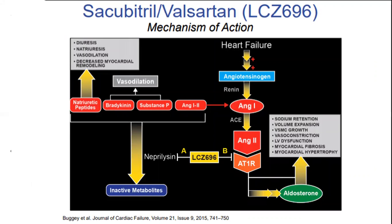How does Sacubitril-Valsartan work? Valsartan is an angiotensin receptor blocker which inhibits the AT1 receptor of angiotensin 2, causing vasodilation and decrease in blood pressure. Sacubitril inhibits neprilysin degradation. Usually neprilysin breaks down natriuretic peptides and other vasoactive peptides. When we inhibit neprilysin breakdown, we get all the beneficial effects of natriuretic peptides and other vasoactive peptides like bradykinin and substance P.